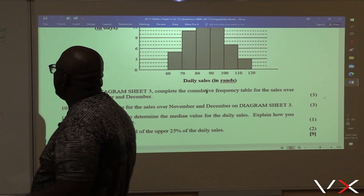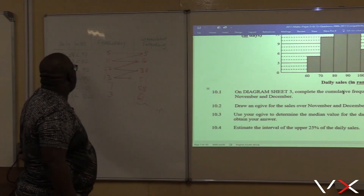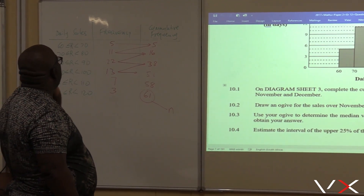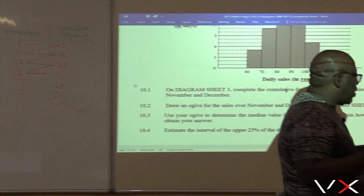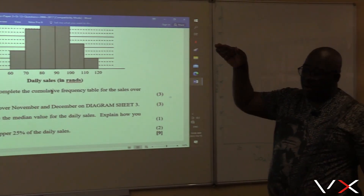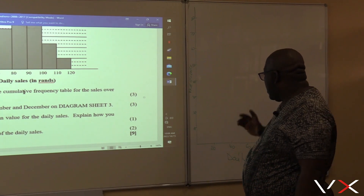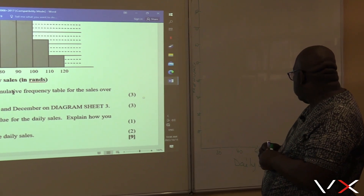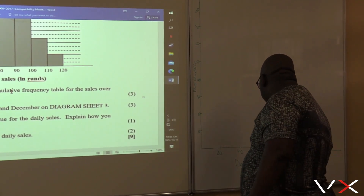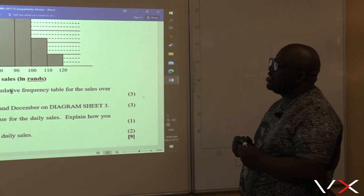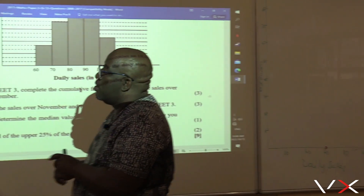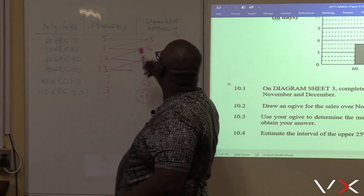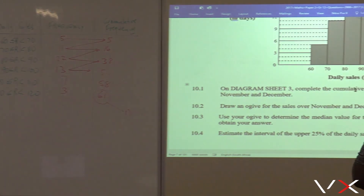How do you draw an Ogive? The first point will be 60. For the first point, we'll take the lower limit — but moving forward, we'll be taking the upper limit. We're going to put our coordinates until we get our Ogive. Remember, our Ogive is a graph that looks like Inyoganyoga. The daily sales start at 60, so the first coordinate is (60, 0). That's where we start.